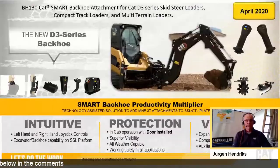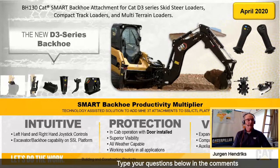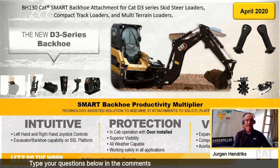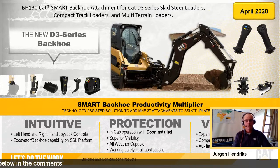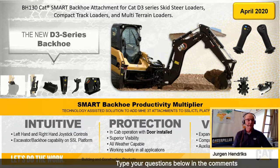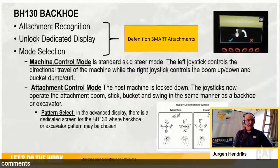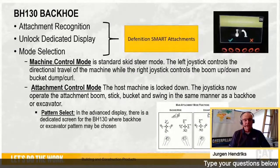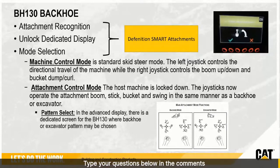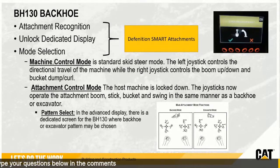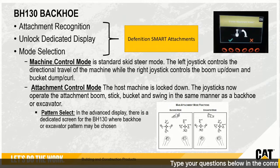An example of a smart attachment is the BH130. The BH130 replaces the BH150 and BH160. If you recall, the BH150 and BH160 had their own levers outside the cab, so the door was basically blocked open and you could not close it. We have now fully integrated the BH130 into the machine hydraulics as a smart attachment. As soon as you connect the BH130, the machine recognizes it as a BH130 backhoe, unlocks the dedicated display shown on the right, and gives you mode selection.